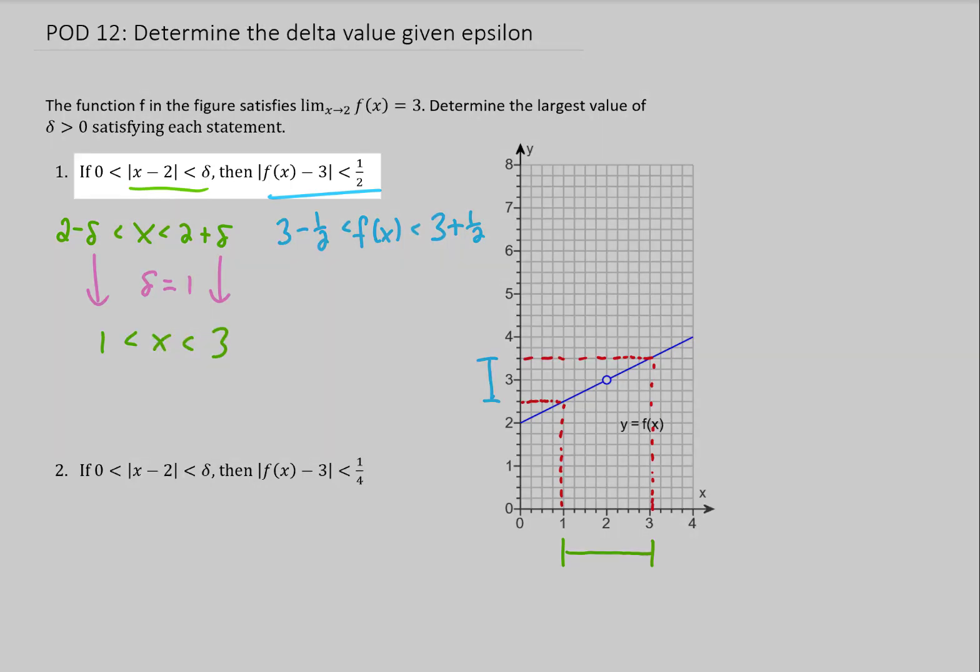So let's run through this notation again. Let's write this sentence out with that delta plugged in. This sentence says that if x is between 1 and 3, then y is between 2 and 1 half and 3 and 1 half. Saying this another way, if x is within a distance of 1 from 2, then y is within a distance of 1 half from 3.